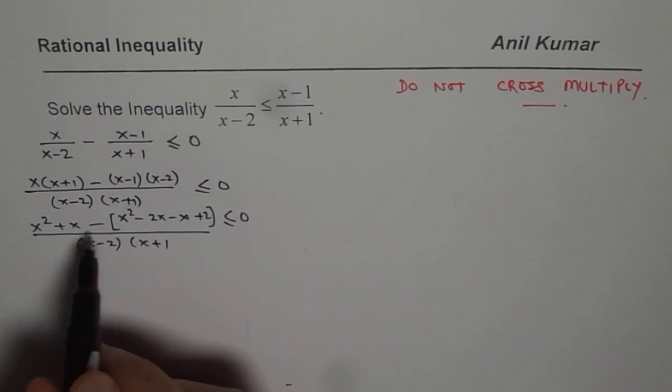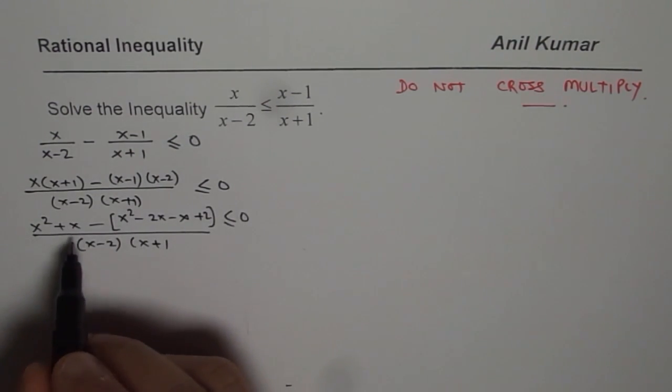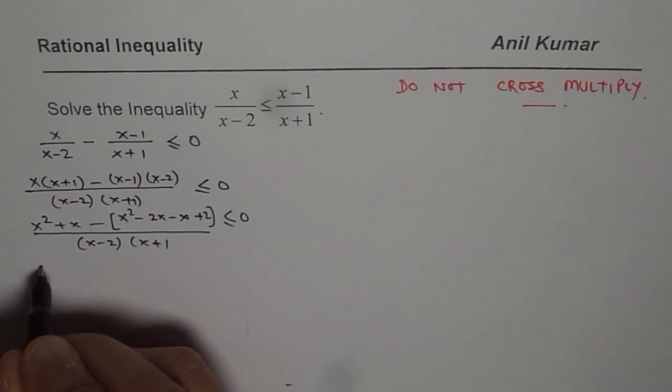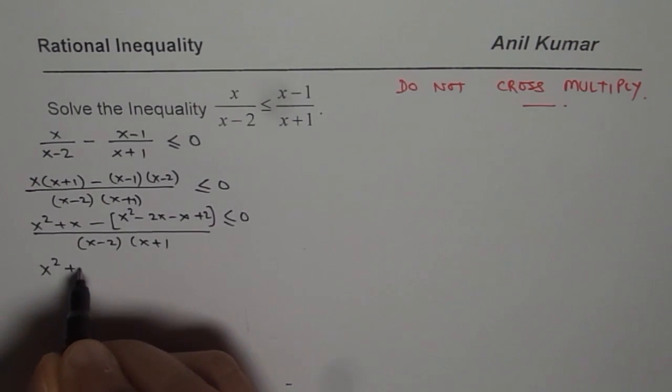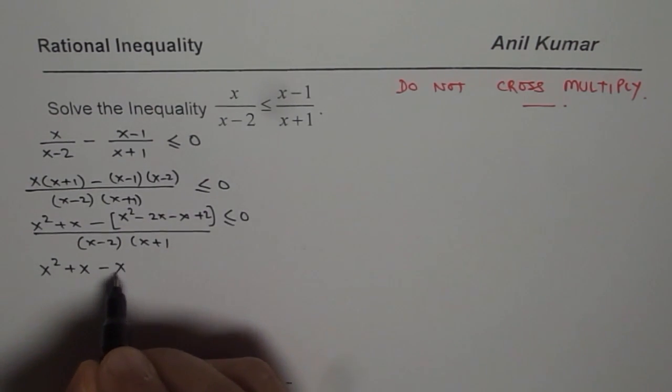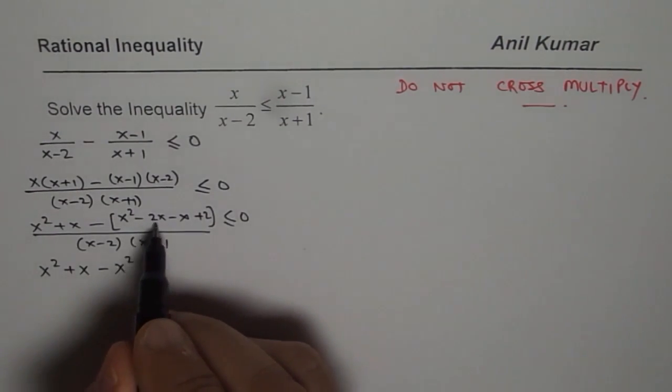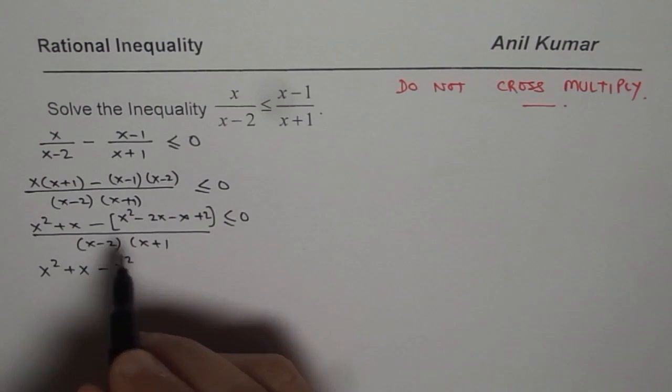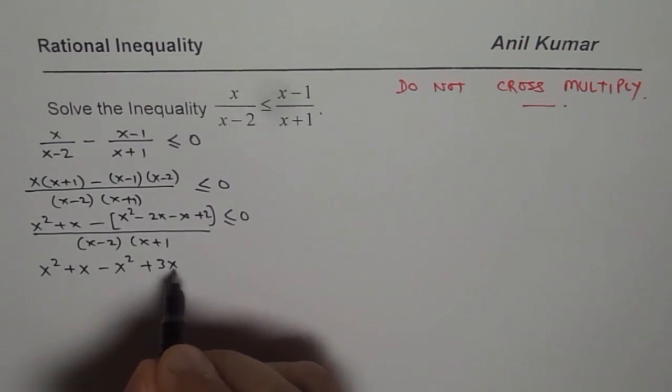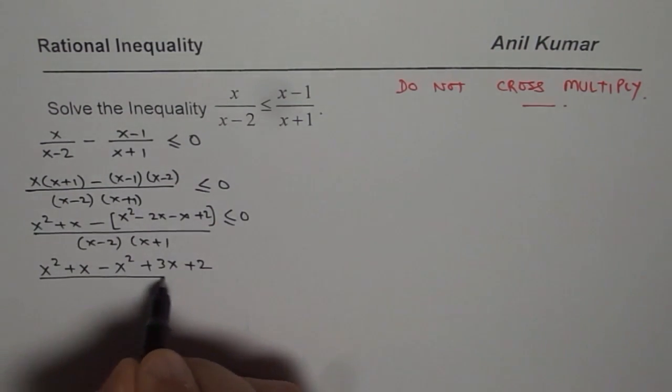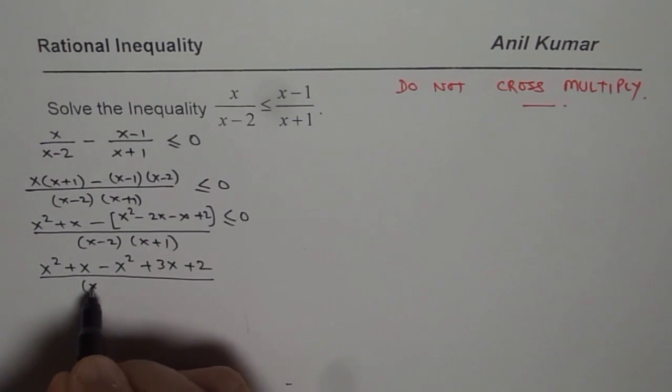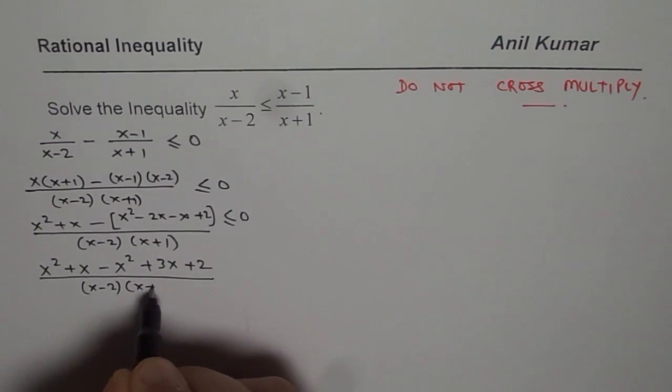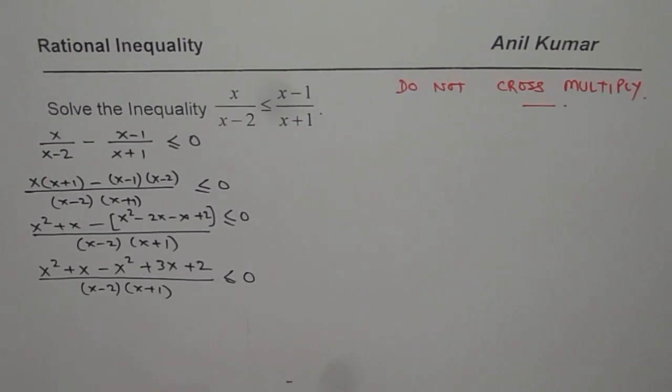We have x square minus x square, which is 0. And then we have minus x, or let me do one more step. x square plus x minus, let us open the bracket. And minus 2x minus x is minus 3x. When you open, it becomes plus 3x minus 2 divided by x minus 2 times x plus 1, less than equals to 0.